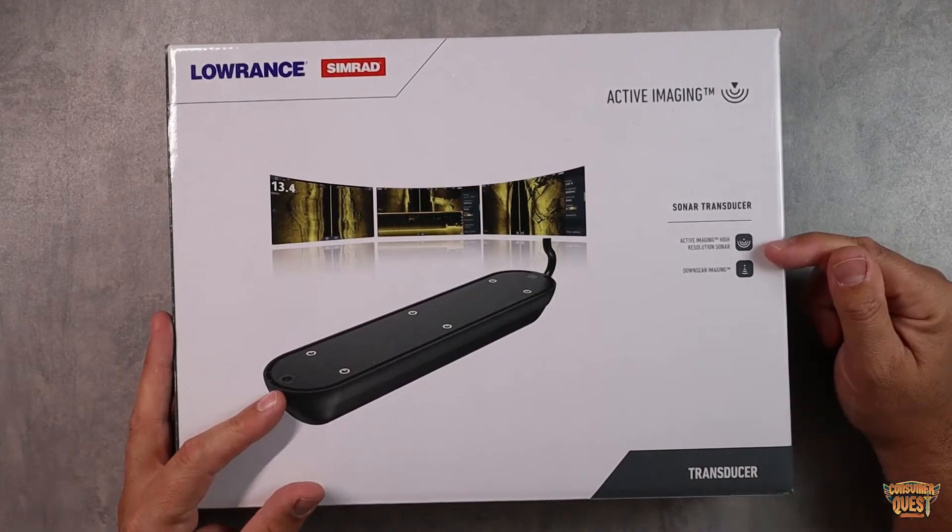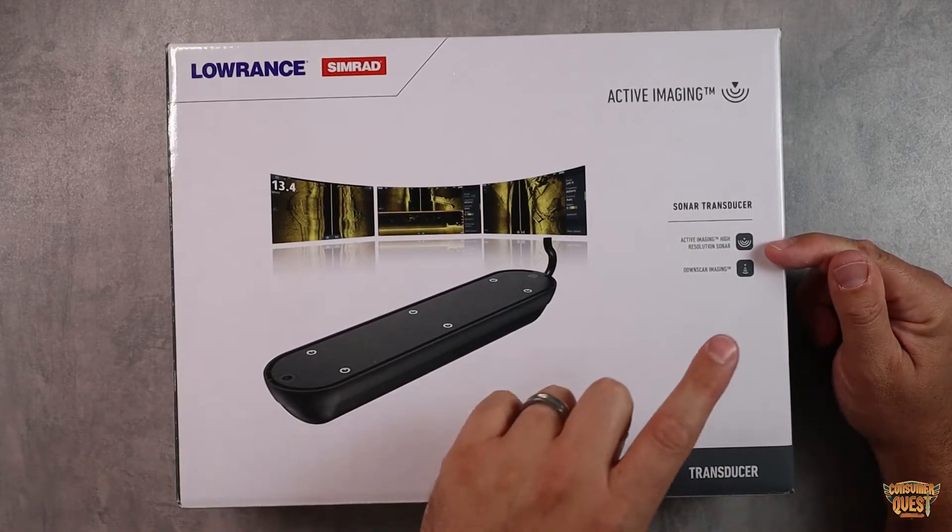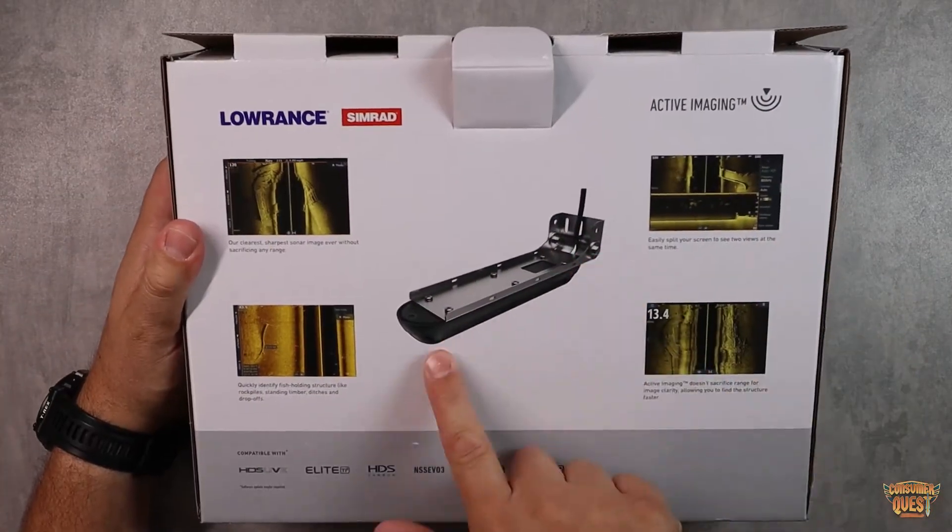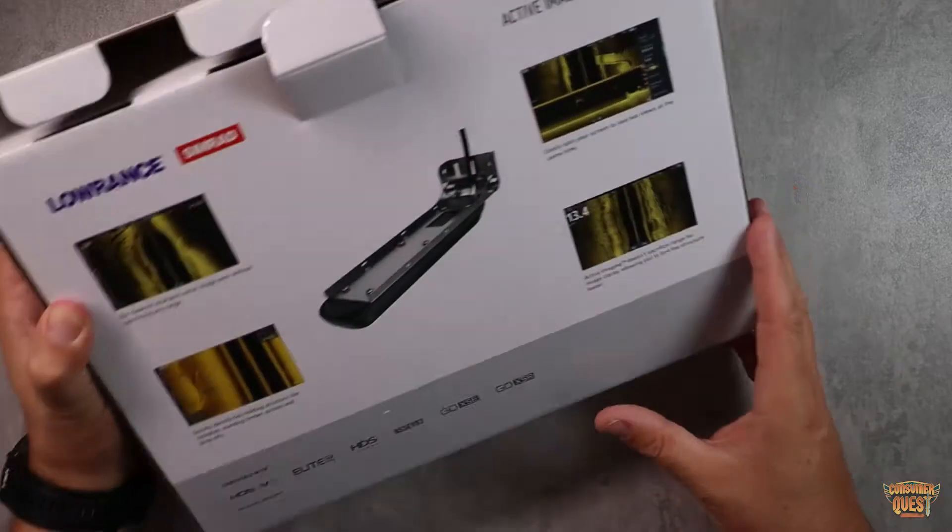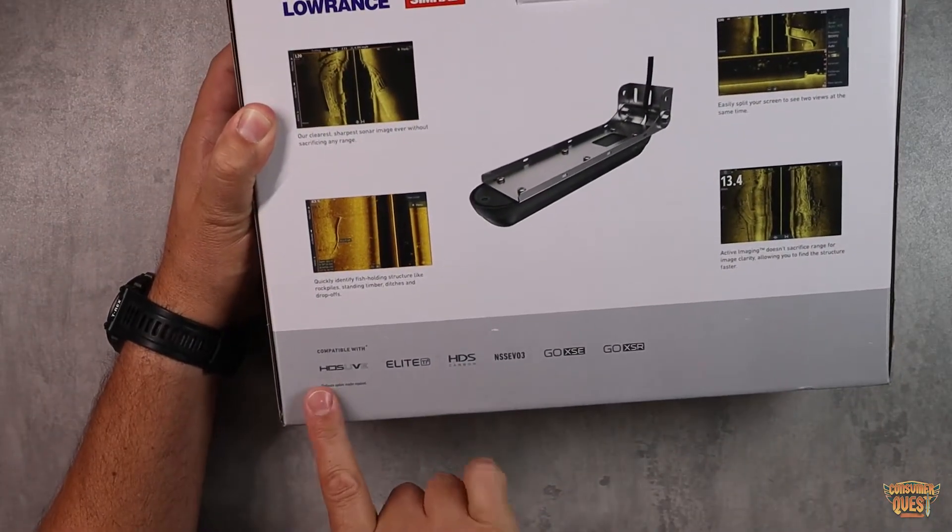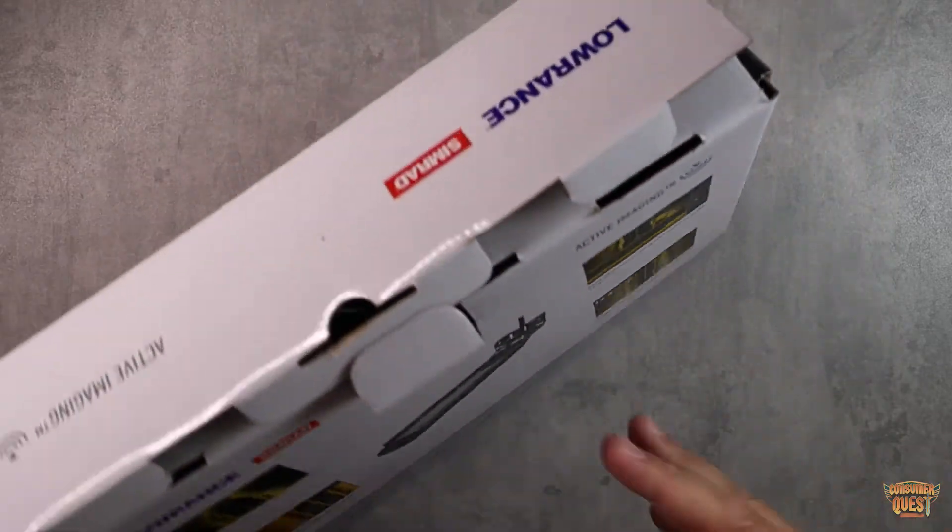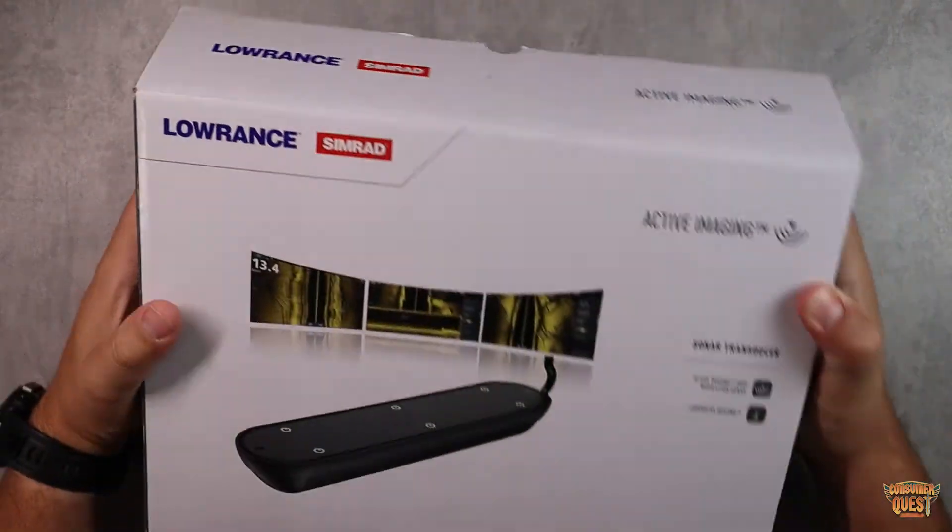So first things first, again, active imaging, high resolution sonar, and downscan imaging. So let me pull this thing out and show you guys what you get in the package. It's very straightforward. As you can see on the back, this is what the transducer looks like, but we'll look at it up close. It also gives you a compatible list and tells you a little bit what's available for it. But let me pull everything out of the box and show you what you get inside.